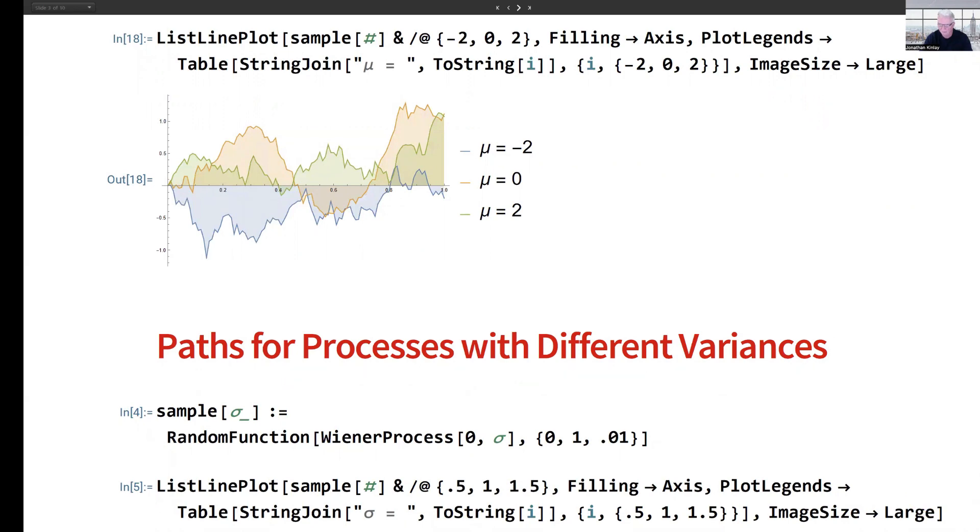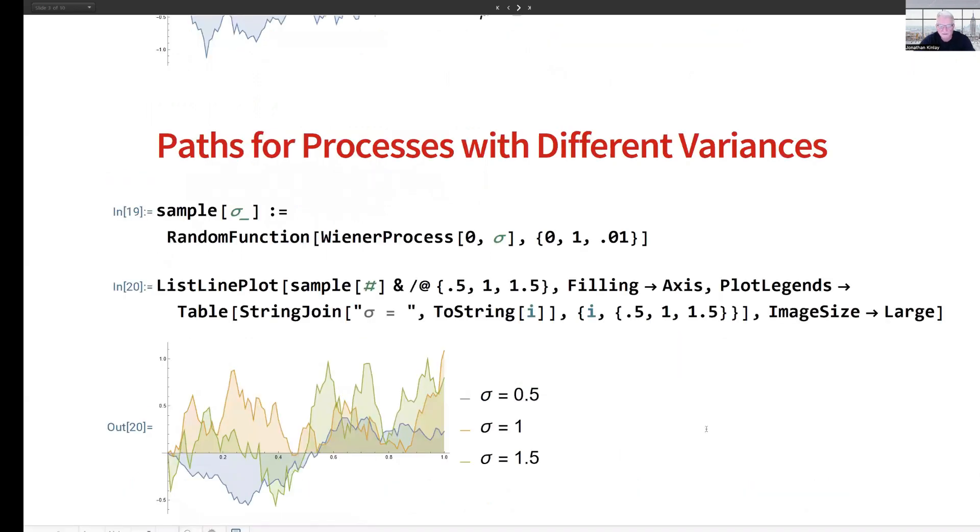When we do that, we can see sample paths for Wiener processes with standard deviation 0.5, 1, and 1.5. And we can look at several different examples from those processes.